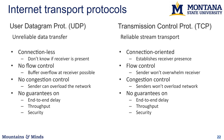TCP requires you to first establish a connection — there's an agreement between sender and receiver that they're ready to communicate. Buffers are set up on both sides so data going back and forth can be saved by the operating system. There is flow control, meaning the sender won't send more data than the receiver has memory for. There's also congestion control: the sender pays attention to the network and doesn't send too much data, monitored via acknowledgments from the receiver.